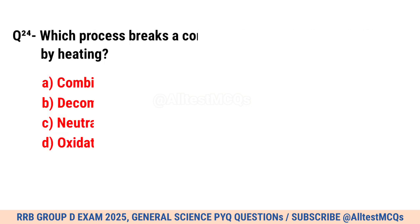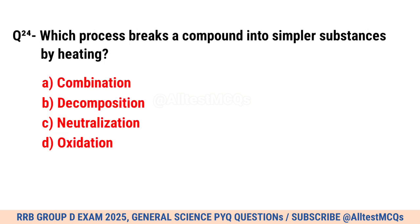Question No. 24. Which process breaks a compound into simpler substances by heating? Correct option is B. Decomposition.